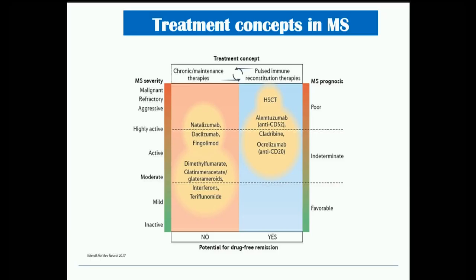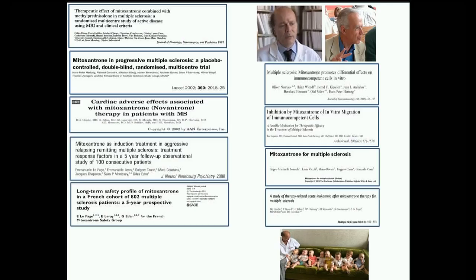Looking at pros and cons of available DMDs: platform injectables may still be used in mild disease; in moderately active disease, the orals or daclizumab; in highly active disease, natalizumab. There is also the category of pulsed immune reconstitution therapies — ocrelizumab, alemtuzumab, and cladribine — which can offer drug-free remission.